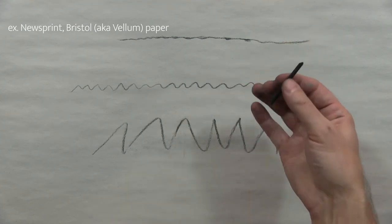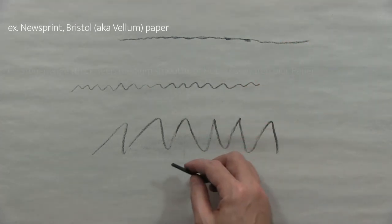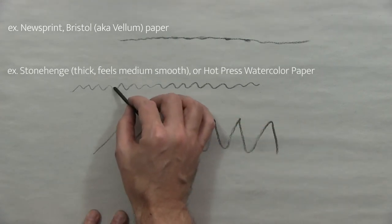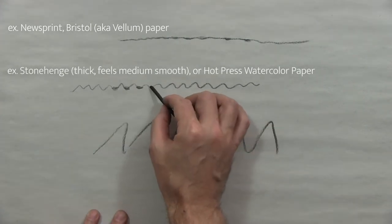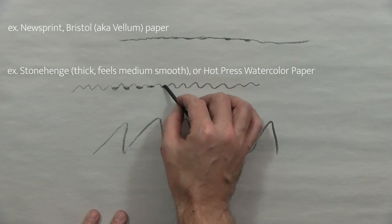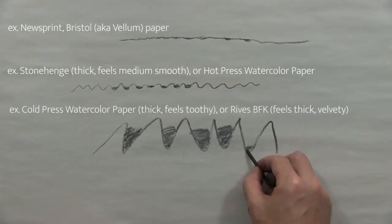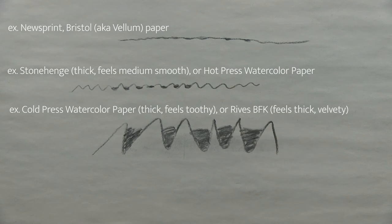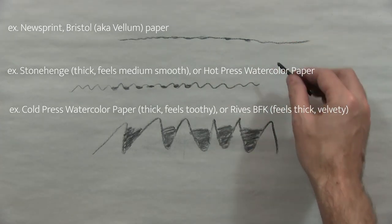A medium roughness is going to latch on to the pigment, and this is one of the differences between cold press watercolor paper and working on something like newsprint or the Bristol board.